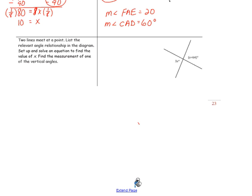Next, two lines meet at a point. List the relevant angle relationship in the diagram, set up and solve an equation to find the value of x, and find the measurement of one of the vertical angles. We have 3x on the left and x plus 64 degrees on the right. The 3x on the left means that the sum of x plus x plus x equals this angle. So we could call this x, x, and x, and we know these are going to be equal to each other.